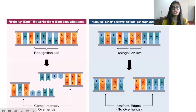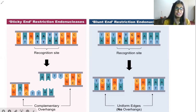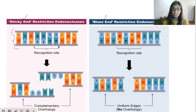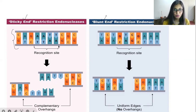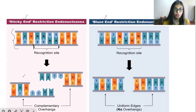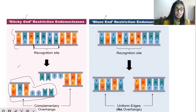When restriction endonucleases act on a DNA sequence, they create two types of ends. One is a sticky end and another one is a blunt end. You can see the DNA strand — this is a recognition site, where the restriction enzyme recognizes the site. Once it recognizes, it has to cleave at a specific sequence, and when it cleaves in a certain manner, complementary overhangs are created. These types of complementary overhangs are called sticky ends.